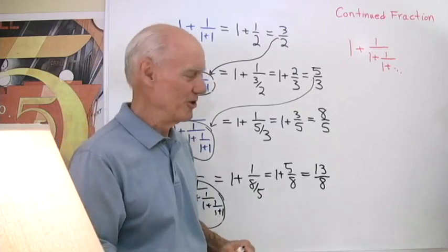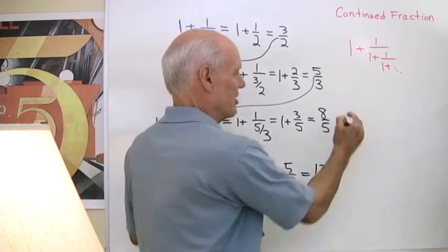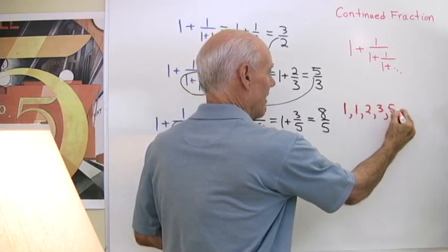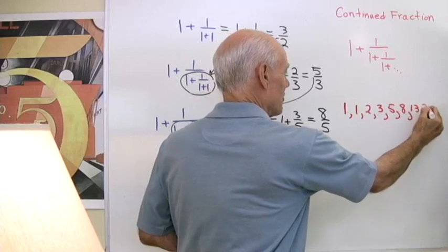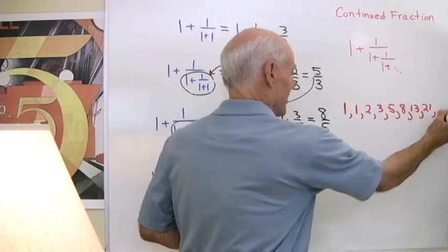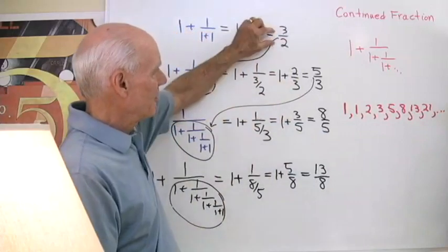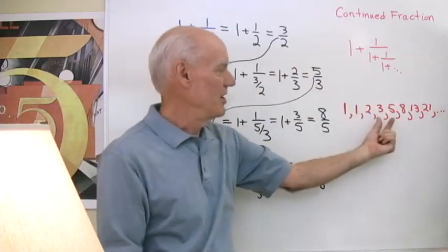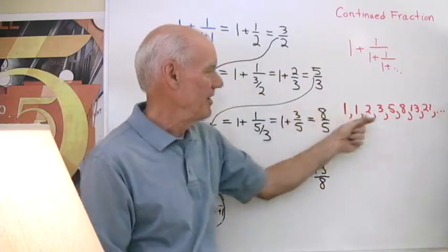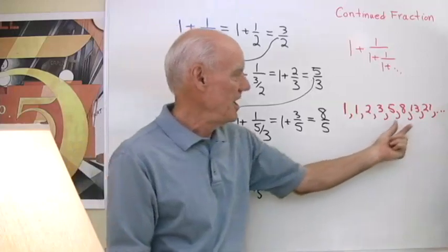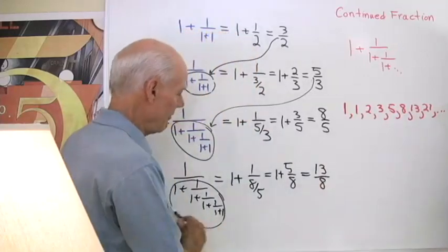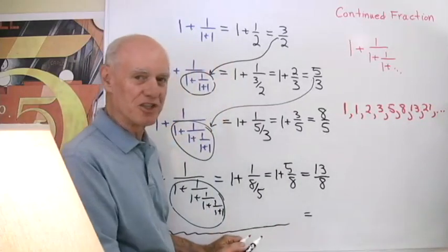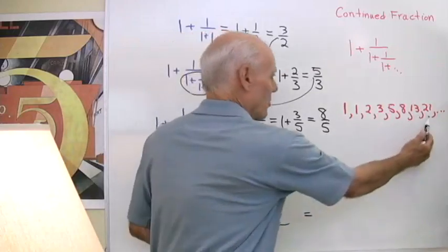Let's look back at the Fibonacci sequence: 1, 1, 2, 3, 5, 8, 13, 21... You can see that 3 halves is the ratio of two consecutive Fibonacci numbers, 5 thirds the ratio of the next two, 8 fifths the ratio of the next two, and 13 eighths the ratio of the next two. So the next number in this sequence is going to be 21 over 13.